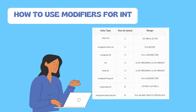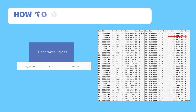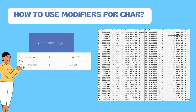For long long int, the size increases to eight bytes, so you can store very large values in such data types. Unsigned long long stores only positive integers of that large range. For char, we can only use two modifiers: signed and unsigned. Char takes one byte — eight bits. For unsigned char, the range is 0 to 255, because 2 to the power 8 minus 1 equals 255. For signed char, the range is -128 to 127.